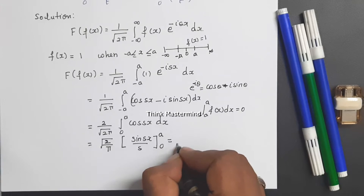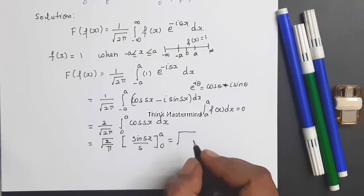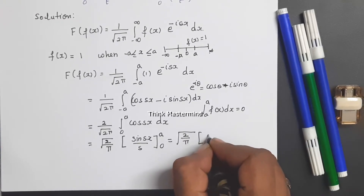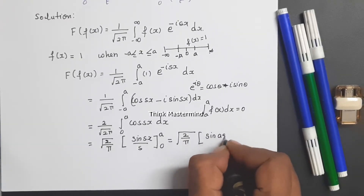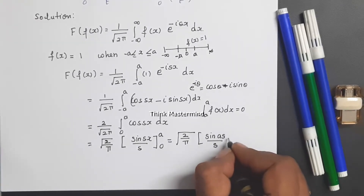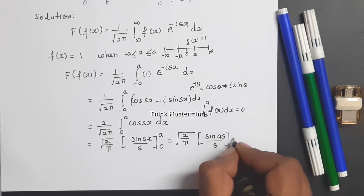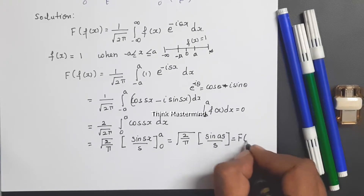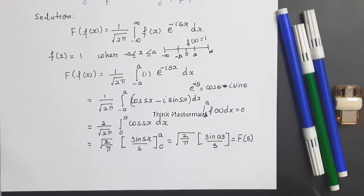Substituting the limits, sin(as)/s minus sin(0)/s = sin(as)/s. Therefore the Fourier transform of f(x) is F(s) = √(2/π) · sin(as)/s.